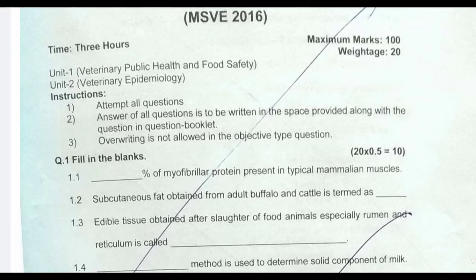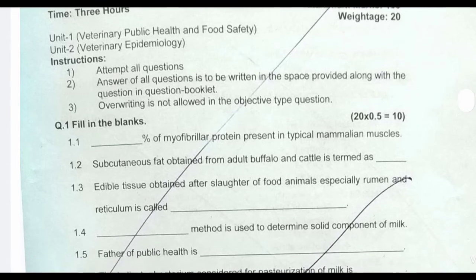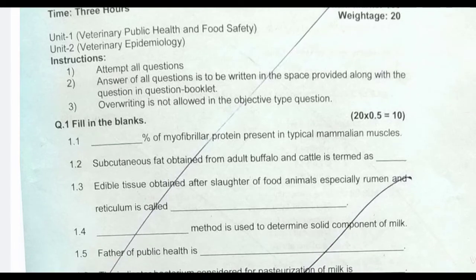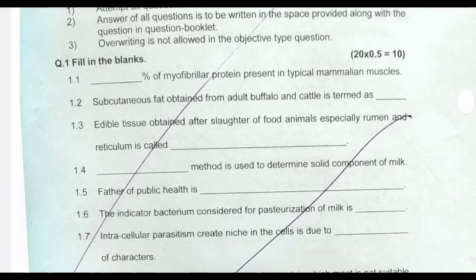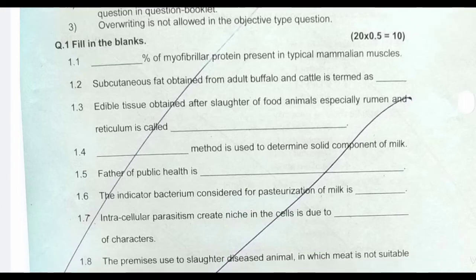Next question: edible tissue obtained after slaughter of food animals, especially rumen and reticulum, is called — the answer is tripe. Next question: dash method is used to determine the solid component of milk — the answer is gravimetric method, in which we find out lactometer readings.